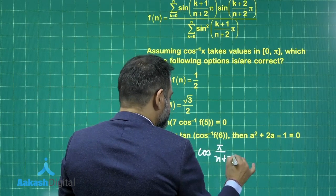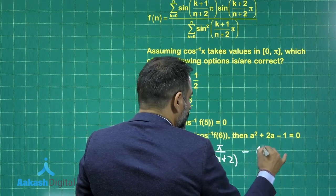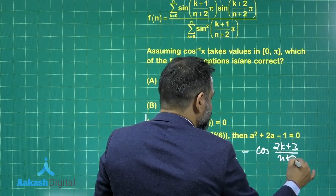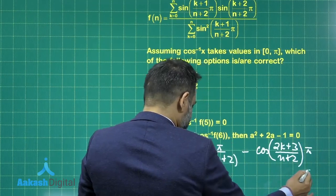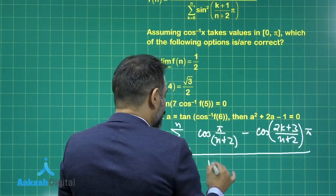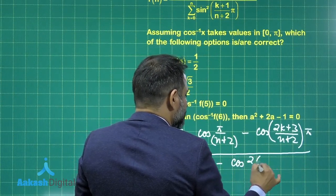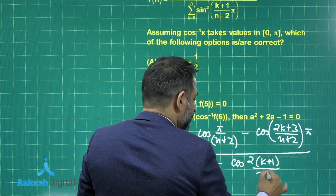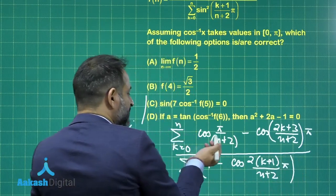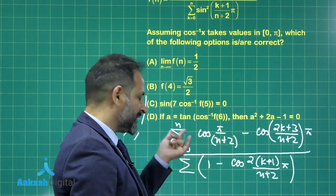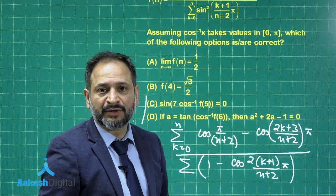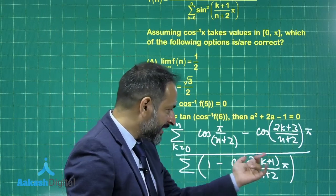It will be cos(A minus B) minus cos(A plus B). This will give you cos of (2k + 3)/(n + 2) times π in the numerator, and 1 minus cos of 2(k + 1)/(n + 2) times π in the denominator — the summation of this quantity. Although the 1 is a constant, k is varying from 0 to n, and the angles are in AP, so we can apply the result of the cosine series.